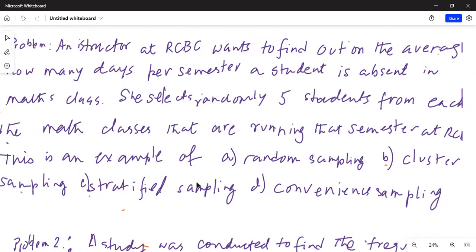An instructor at RCBC, that's a college, wants to find out on the average how many days per semester a student is absent in a math class. She selects randomly five students from each of the math classes that are running that semester at RCBC. This is an example of: